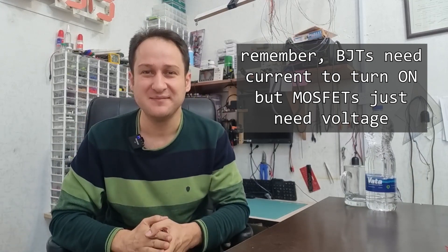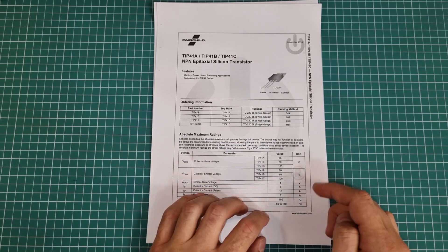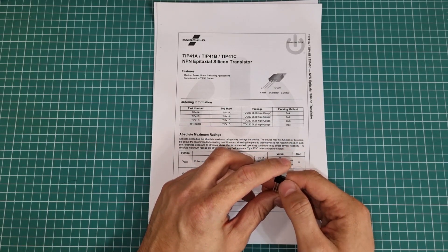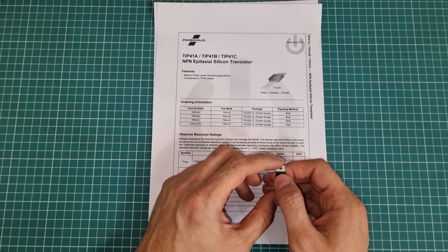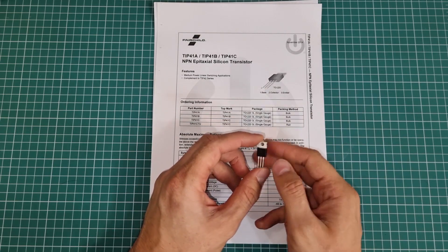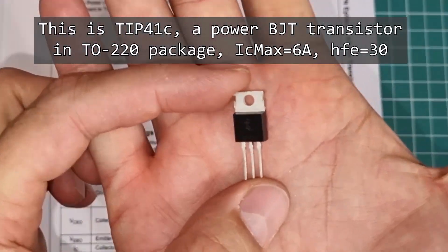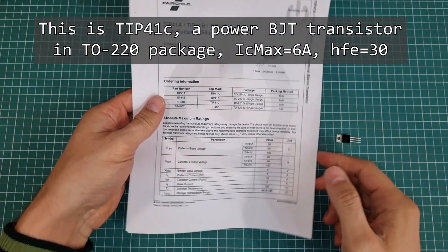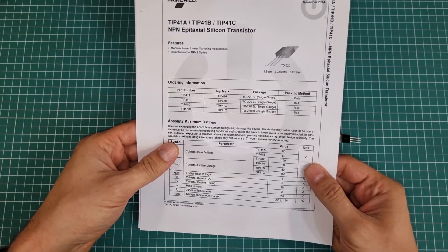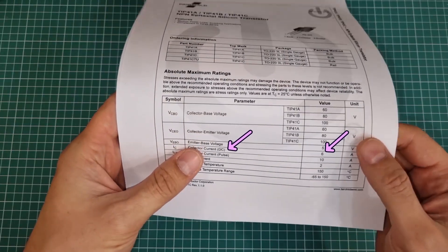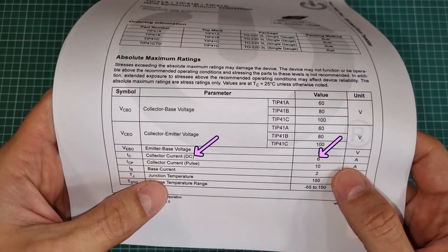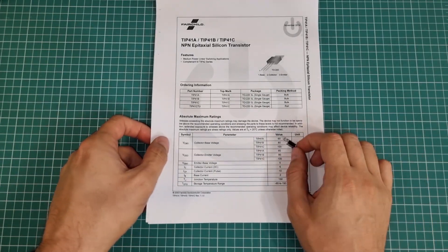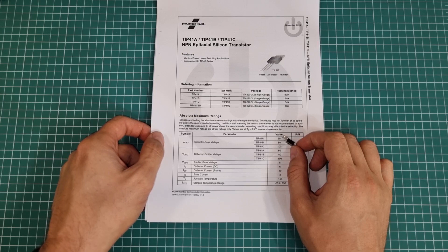Let's see another example. Suppose that you are going to switch on or off a large load through commands from a microcontroller, or a sensor. For example, you need to switch a load that draws 2 amperes. You can use this TIP41 power BJT transistor. According to the datasheet, this transistor can switch 6 amperes, and it is much more than what we need. Look here. But don't celebrate too soon, because there is another problem.